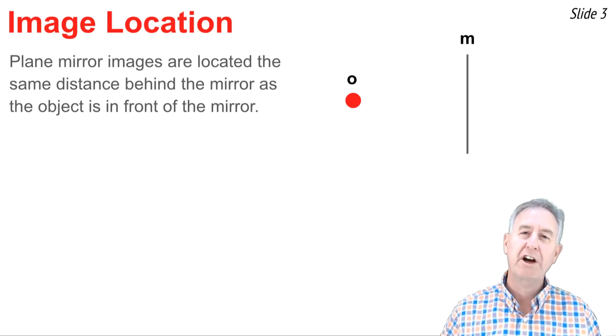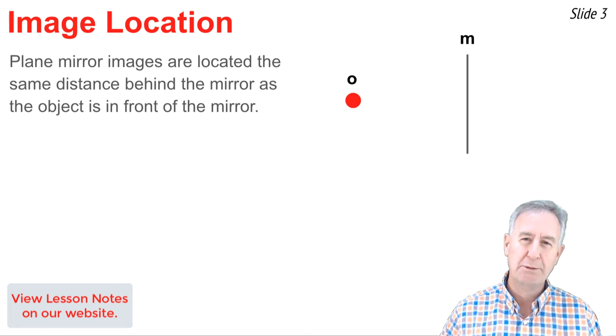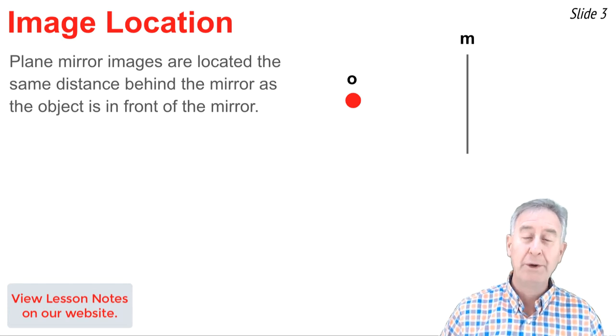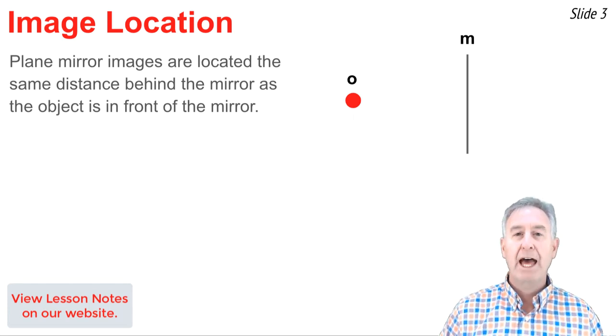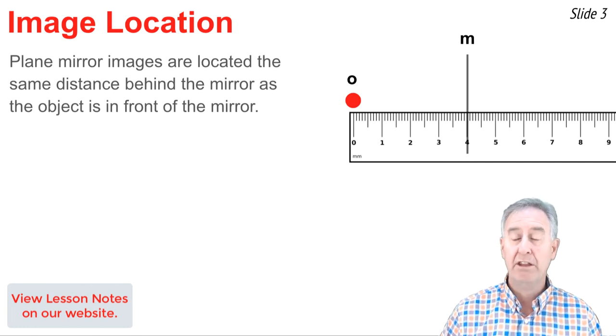The first characteristic we'll talk about has to do with the location of the image. The principle is that the image is located as far behind the mirror as the object is in front of the mirror. We often use this principle to locate the image of an object. Here you see an object in a mirror. The object's marked O, and the mirror is marked M. I can put down a centimeter ruler and measure from the object to the mirror. The image will be the same distance on the other side of the mirror.